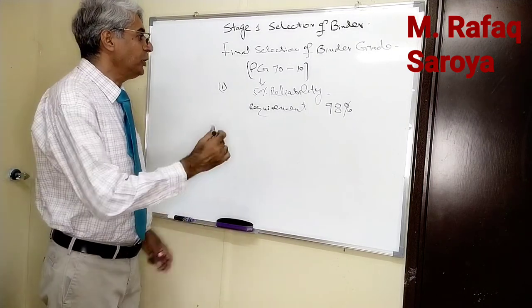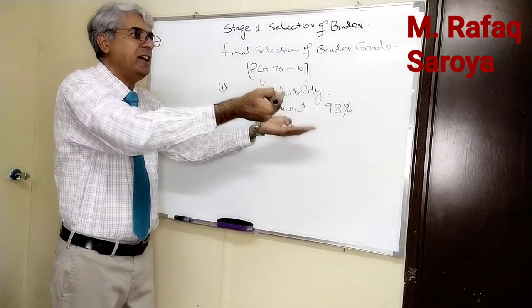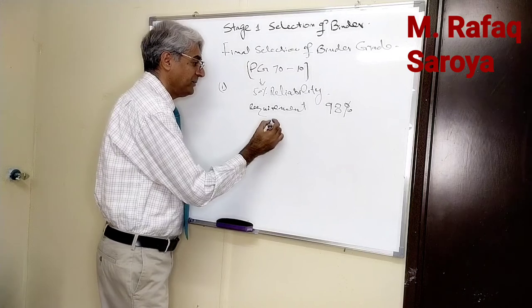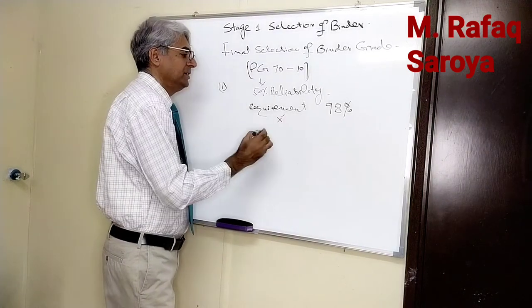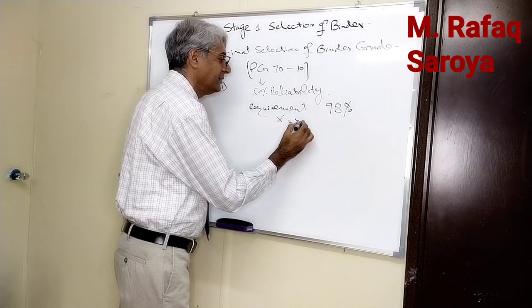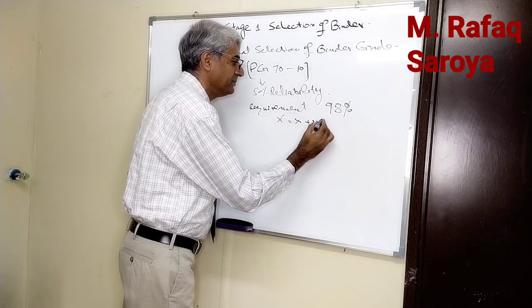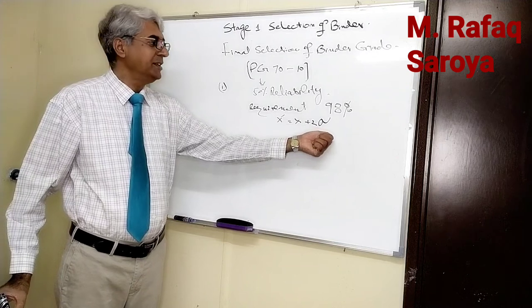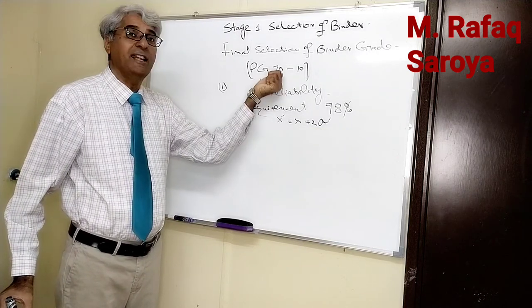We will have to make alteration. We will use the following equation: X dash is equal to X plus 2 sigma. Sigma is the standard deviation. This X is 70 Celsius. If we use this equation, naturally temperature will be high.